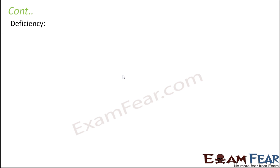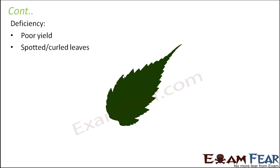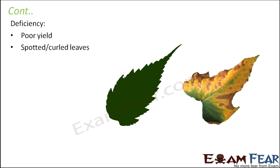Due to deficiency of potassium, there is poor yield because potassium helps the growth of the plant. Spotted or curled leaves are also symptoms — on leaves you often see dark spots and sometimes the leaves get curled. A normal leaf without deficiency looks different; after becoming deficient, you see yellowish color and brown spots, and the leaves tend to curl from outside.